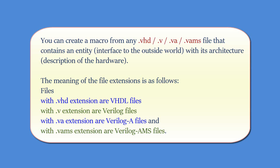The meaning of the file extensions is as follows: Files with the .VHD extension are VHDL files. Files with the .V extension are Verilog files. Files with the .VA extension are Verilog A files and files with the .VAMS extension are Verilog AMS files.